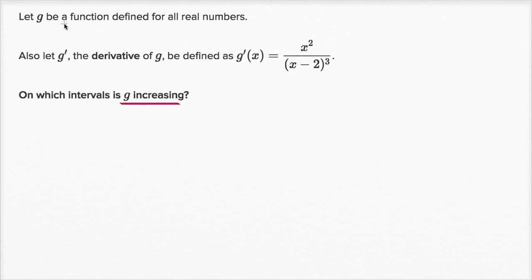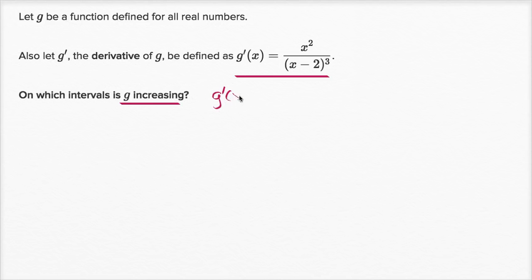At first you might say, well they don't even give us g — how do we figure out when g is increasing? Well the answer is all we need is g prime, which they do give us. Saying on which intervals is g increasing is equivalent to asking on which intervals is the first derivative with respect to x greater than zero. If your rate of change with respect to x is positive, then your function itself is going to be increasing.